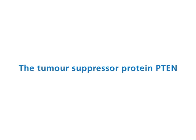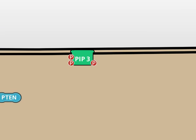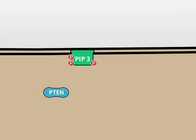The tumor suppressor protein PTEN. The multifunctional PTEN is an important signal protein in the PI3K/AKT signaling pathway. PTEN was named after its function as a phosphatase and its homology to the adhesion protein TENSIN. PTEN hydrolyzes phosphatidylinositol 3,4,5-trisphosphate, or PIP3, and in this way generates phosphatidylinositol 4,5-bisphosphate, or PIP2.